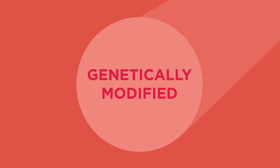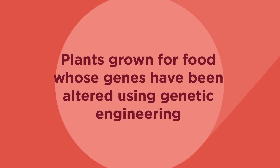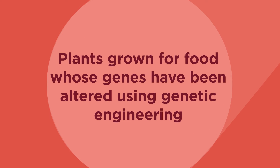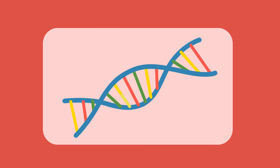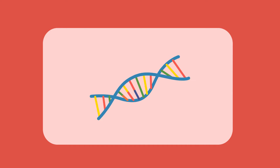GM stands for Genetically Modified, so GM crops are plants grown for food whose genes have been altered using genetic engineering. In some cases, the genes of other organisms have been inserted into the genome of the crop plant to improve it in some way.